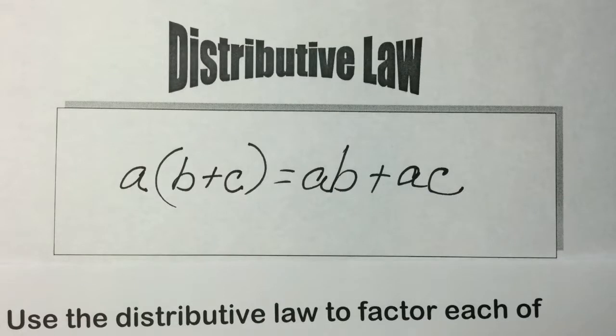We have the basis for a process called factoring. To factor an expression means to write an equivalent expression that is a product. Recall that the parts of the product are called factors. A common factor is a factor that appears in every term in an expression.